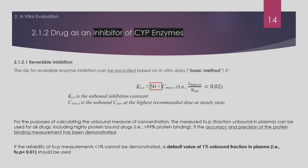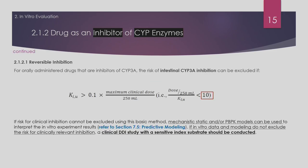Regarding the unbound fraction: in Appendix 7, the protein binding assay is described. If the unbound fraction is lower than 1%, there are considerations. The formula involves multiplying by 0.02 Cmax unbound. Understanding the unbound fraction with this formula is important, as it will be mentioned many times throughout the guideline.